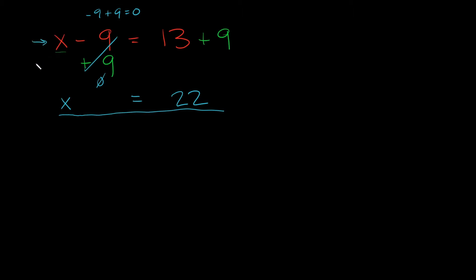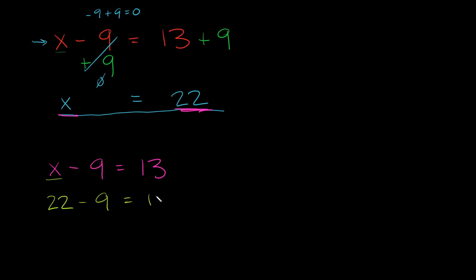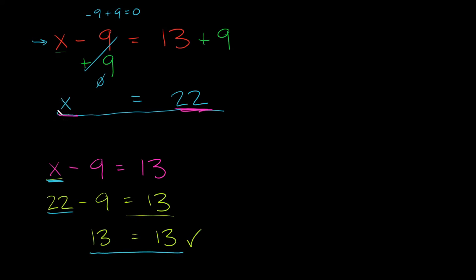We have to plug it into the original equation and see if it works. x minus 9 is equal to 13. I'm going to plug in 22 for x: 22 minus 9 is equal to 13. What is 22 minus 9? That's equal to 13, and we have equals 13 on the other side. Is 13 equal to 13? Yes. So when we plugged in 22 for x, we got a balanced equation — our answer x equals 22 was correct.